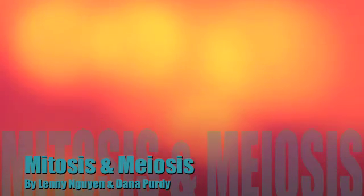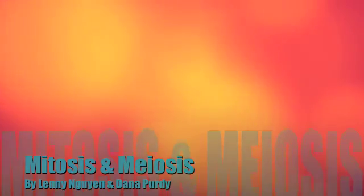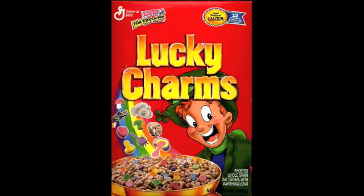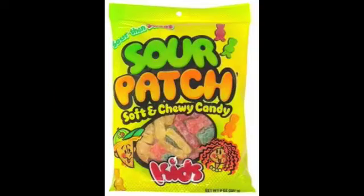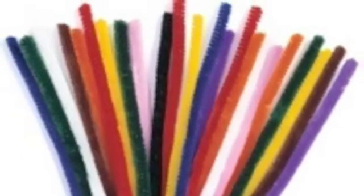Multicellular organisms reproduce by cell division. The process of duplicating a cell's genetic material is mitosis. Meiosis is similar to mitosis but it creates genetically different offspring. Explaining the process of mitosis and meiosis, we use Lucky Charms, Sour Patch Kids, and Pipe Cleaners to reenact the process of cell division.